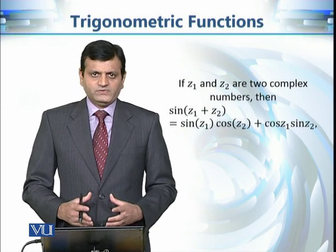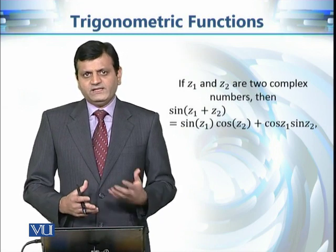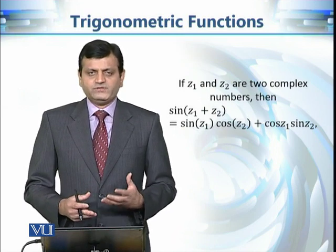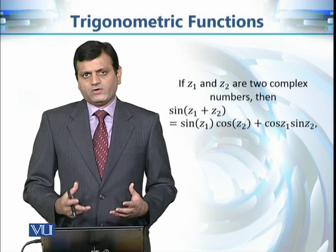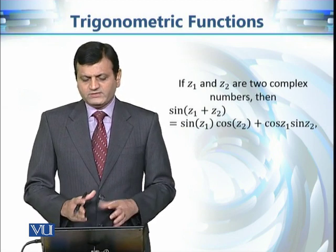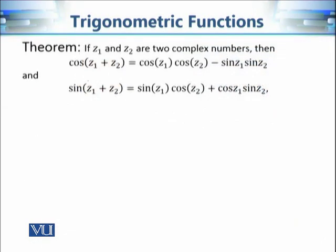At each step we will compare differences between the real and complex cases. In this case there is no difference. Similarly, there is an addition identity involving cosine, and once again there is no difference between the real and the complex case. You can see these two identities on the screen.